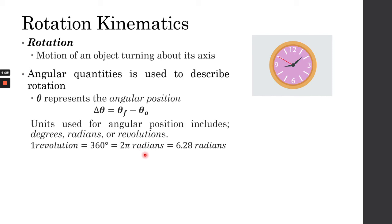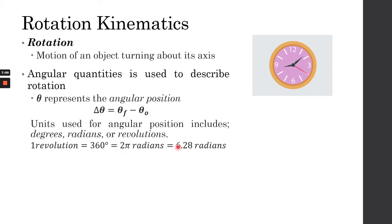In radians, one whole revolution is 2 pi radians, which is another measurement of angle. 360 degrees equals 2 pi radians, or approximately 6.28 radians. So: one revolution equals 360 degrees, equals 2 pi rad, equals 6.28 radians. Remember this conversion factor — if a problem gives you degrees and asks for radians, you can easily convert the answer.